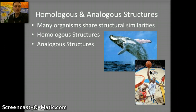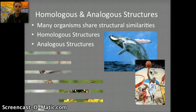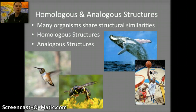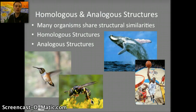The opposite of that is analogous structures, and these are similar in function but are not due to a common ancestor — they're not derived from a common ancestor, and they also can differ in their fundamental structure. A good example is the wings of birds and the wings of bats or insects. Both of these different species have wings, but they are not derived from a common ancestor and they have different fundamental structures.